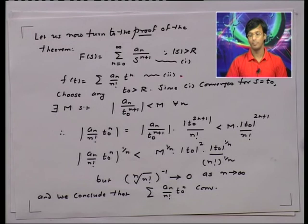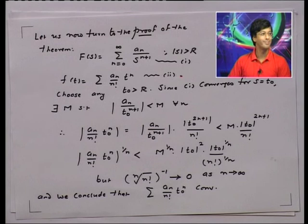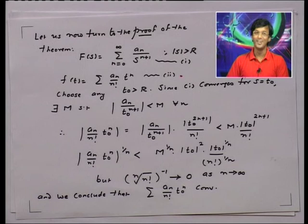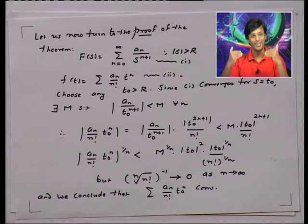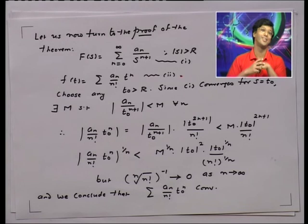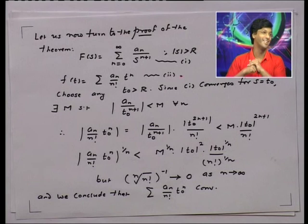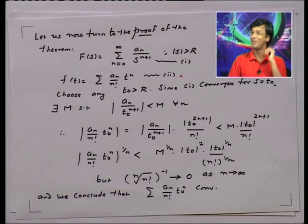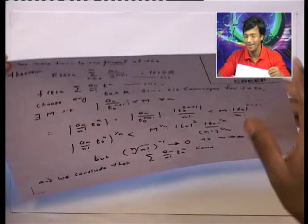That is the first important piece of information. The next thing to do is to show that the function is of exponential type when restricted to the real line, and the third thing is to show that taking the Laplace transform term by term is valid. All these things have to be done. All that has been shown so far is that the power series sigma a_n upon n factorial times t to the power n converges for all t.